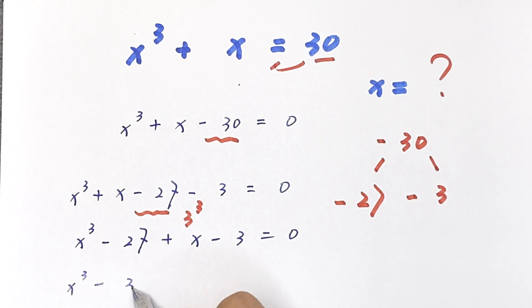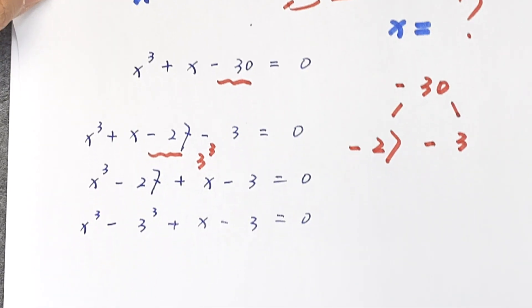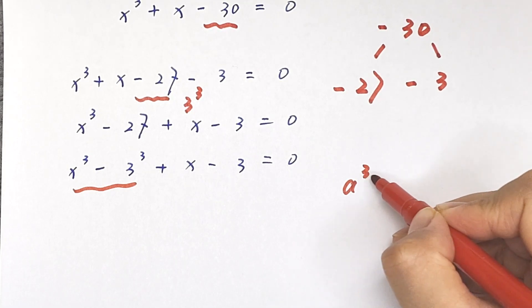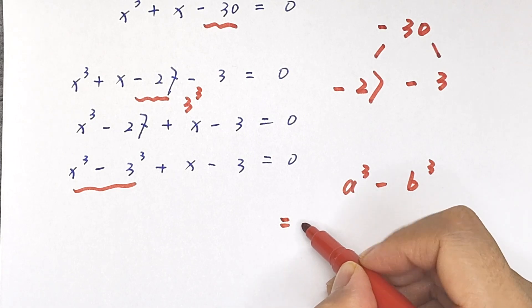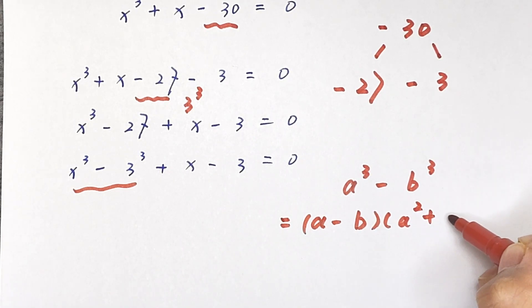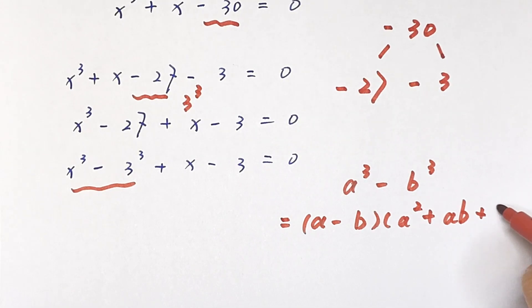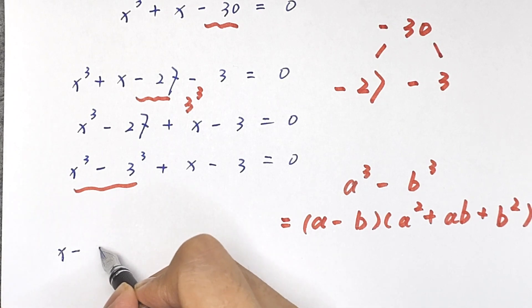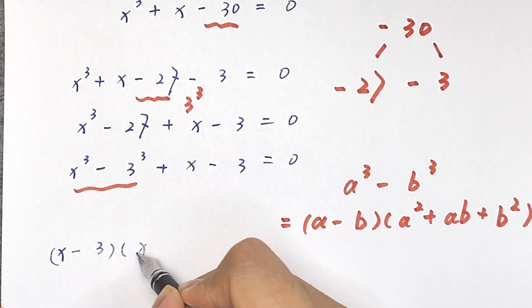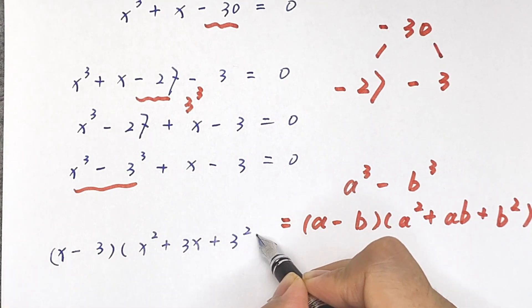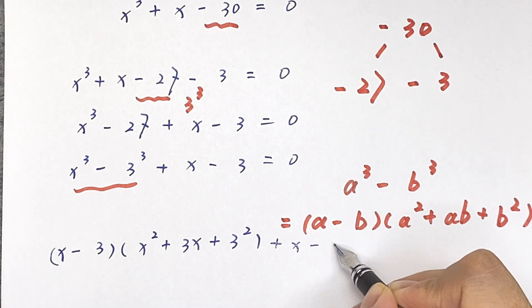Now we have x cubed minus 3 cubed plus x minus 3 equals 0. We will apply the difference of cubes rule: a cubed minus b cubed equals a minus b, times a squared plus ab plus b squared. So we get x minus 3, times x squared plus 3x plus 3 squared, plus x minus 3 equals 0.